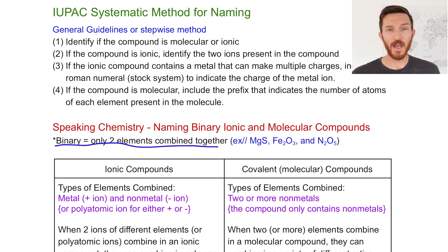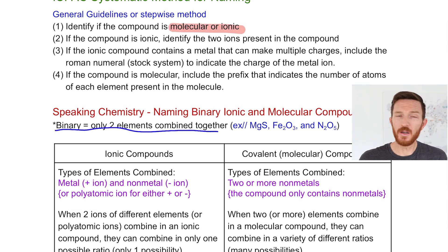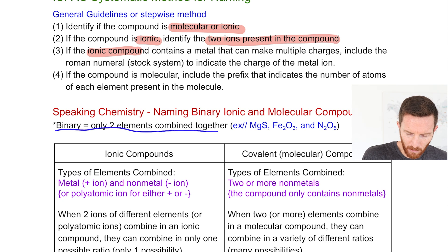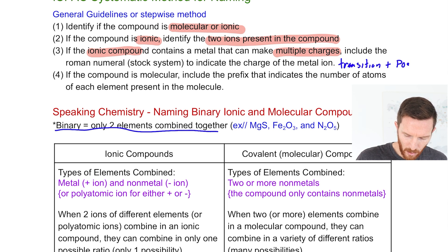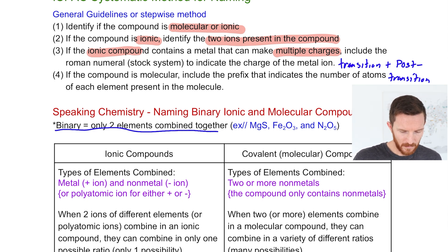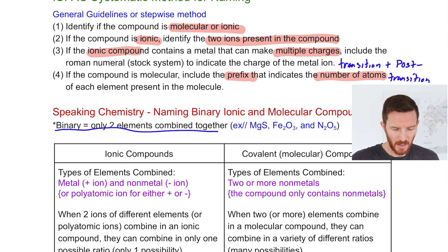We're going to talk about naming binary compounds — meaning two different elements combined — both ionic and molecular. When naming binary molecular and ionic compounds, we first want to identify what kind of compound it is. If it's ionic, we find the two ions present. If the metal can make multiple charges — typically transition and post-transition metals — we need to determine the specific charge. For molecular compounds, we use prefixes to name the number of atoms, since they can combine in many different ratios.